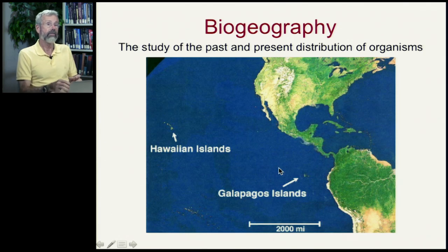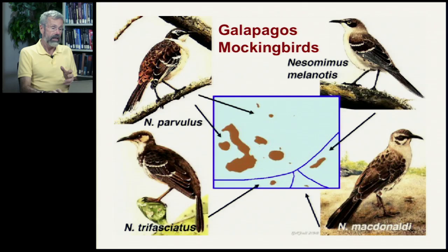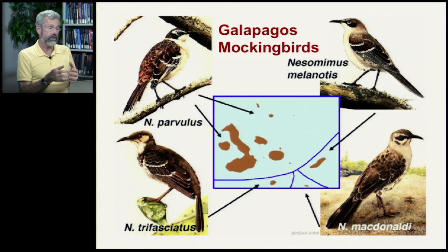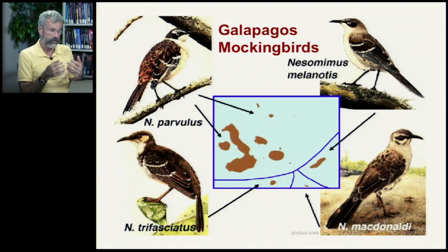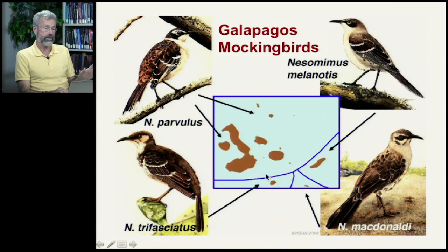These islands have been formed about the same time and are isolated from anywhere else on Earth. We've already seen the Galapagos finches. There are other birds that live on the islands — the Galapagos hummingbird, the Galapagos mockingbirds. They've all been given the same genus name, but they're four perfectly good species. They're rather similar to each other, and they're found in the Galapagos and nowhere else.